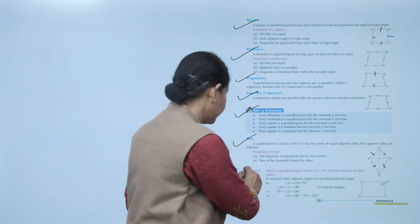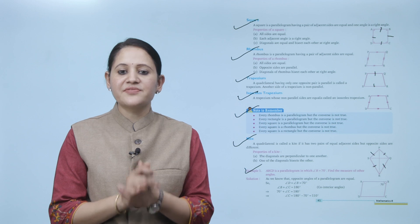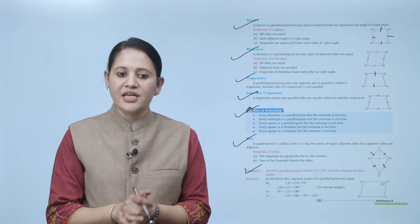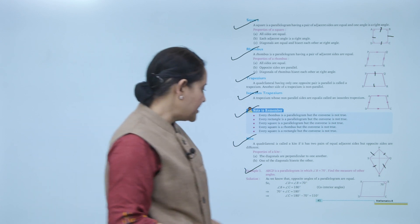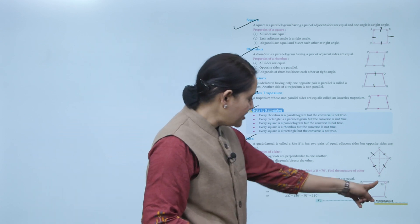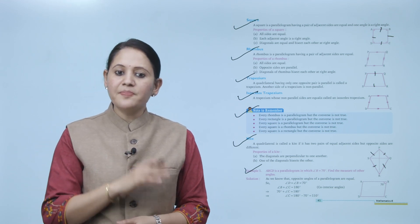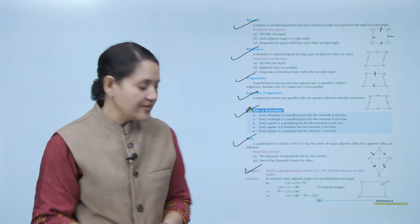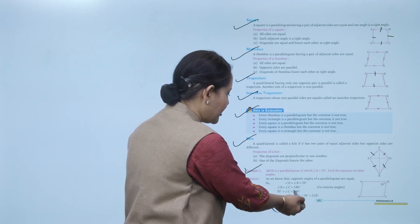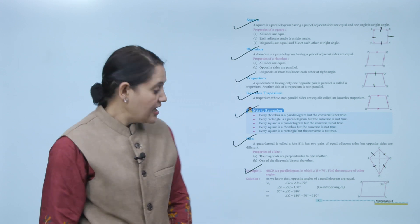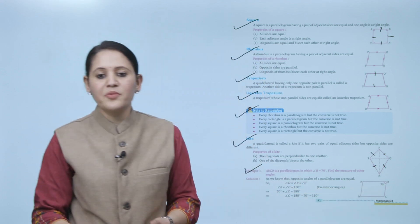Example: ABCD is a parallelogram in which angle B is 70 degrees. Find the measure of the other angles. As we know, opposite angles of a parallelogram are equal, so angle D equals 70 degrees. Since angle B plus angle C equals 180 degrees, angle C equals 180 − 70 = 110 degrees. Since angle A and C are opposite, angle A equals 110 degrees.